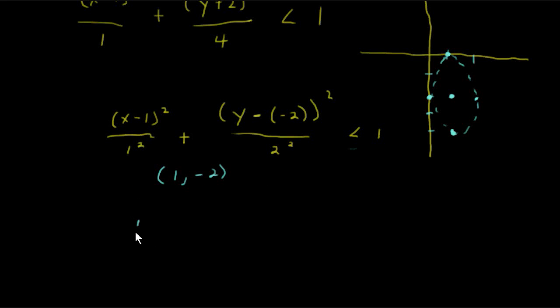And the center is just as good of a test point as any. So if I plug 1 in in place of x, and if I plug a -2 in in place of y, will I get a true statement or a not true statement? If it's a true statement, I want to shade inside. If it's not true, I want to shade on the outside.